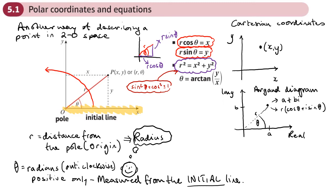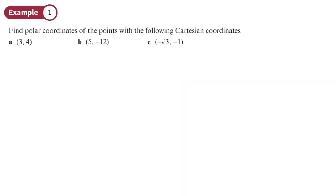r² = x² + y², and that's useful for turning a polar equation into a Cartesian equation. We derive it by expanding (r cosθ)² + (r sinθ)², factorising out r², then cos²θ + sin²θ = 1 gives x² + y². And since angles are measured in radians, we write arctan instead of tan inverse to work out the angle.